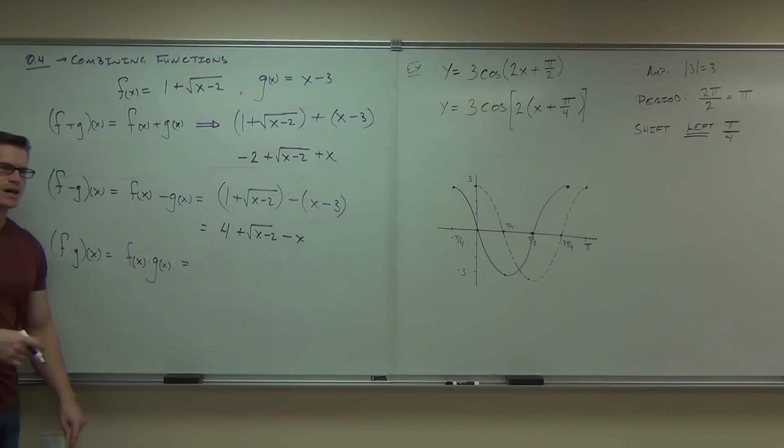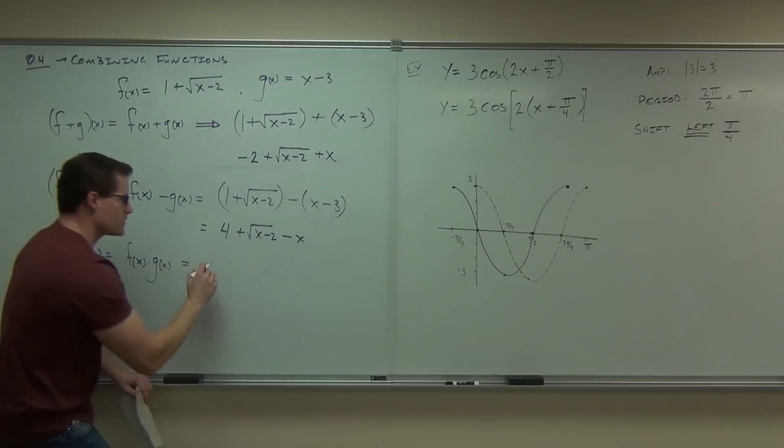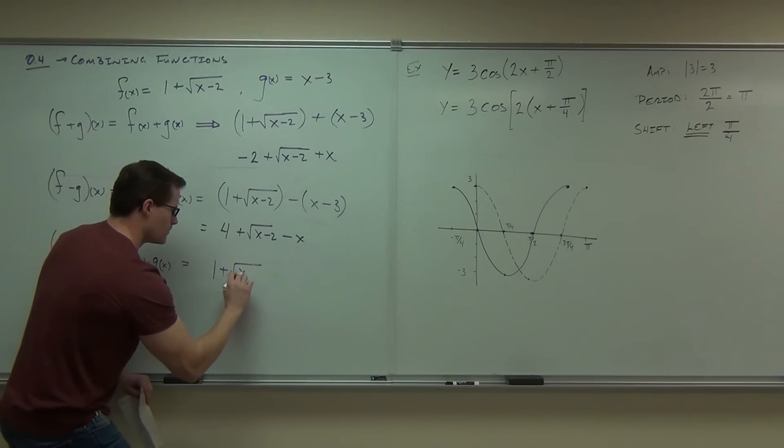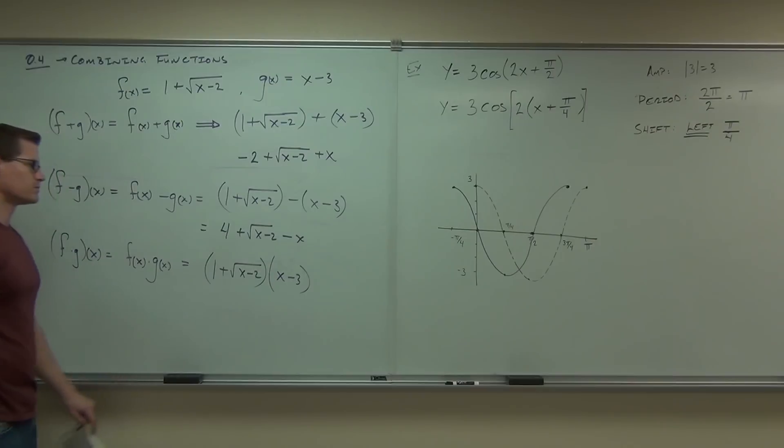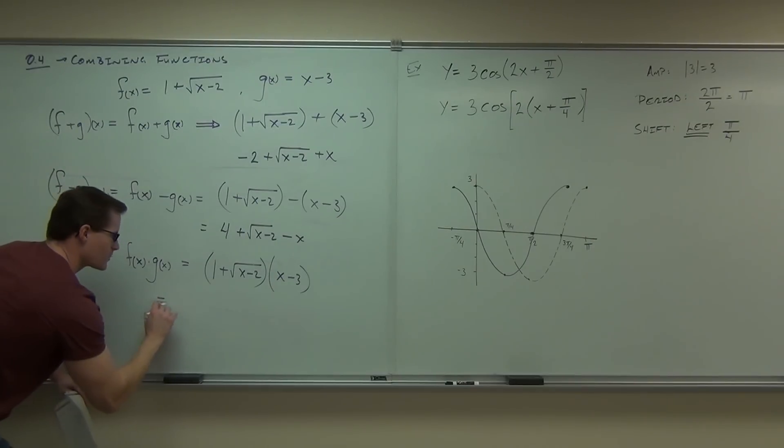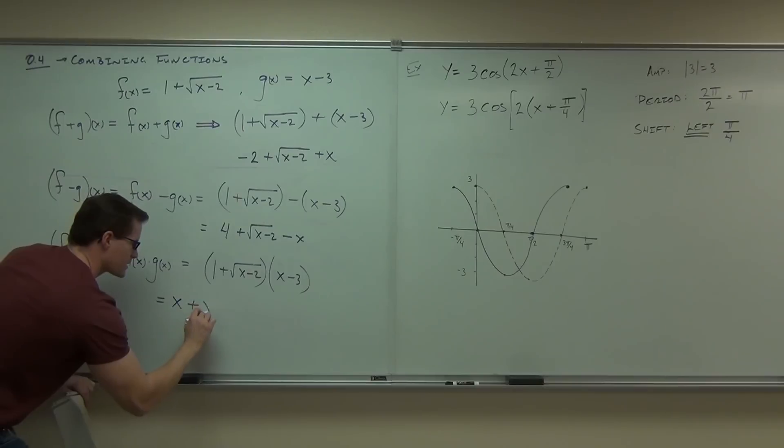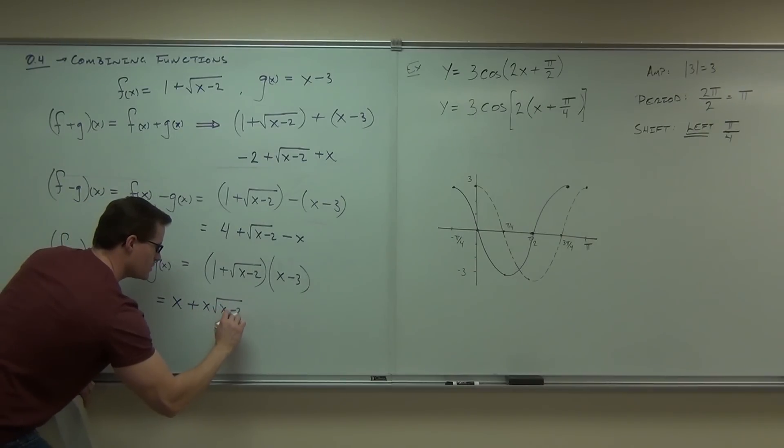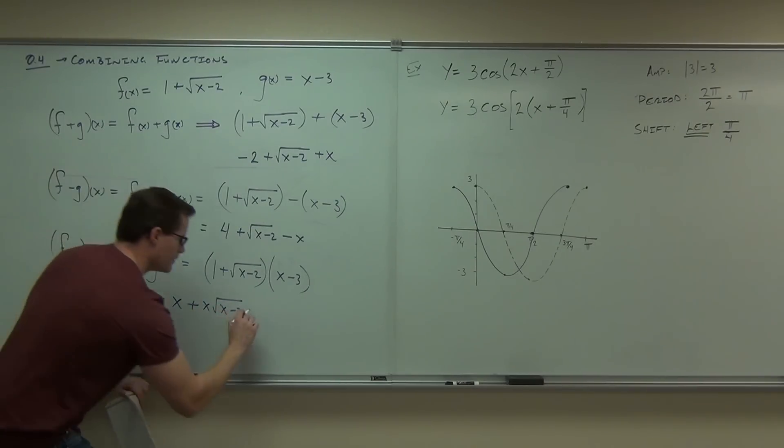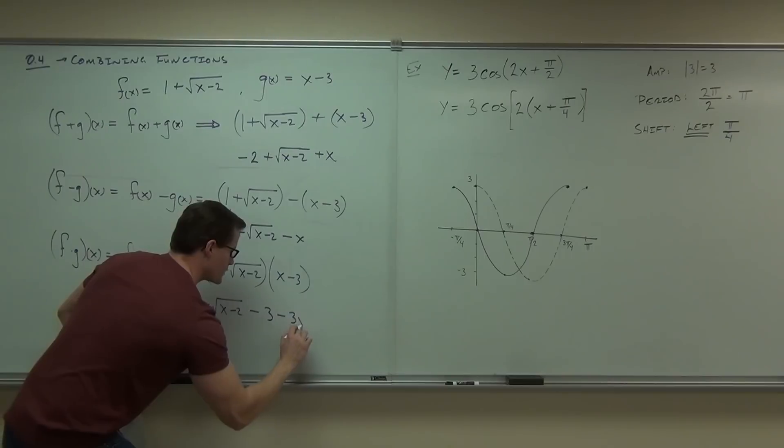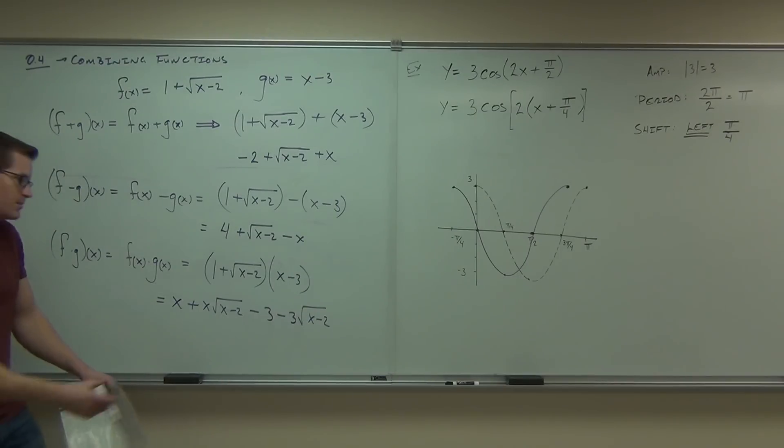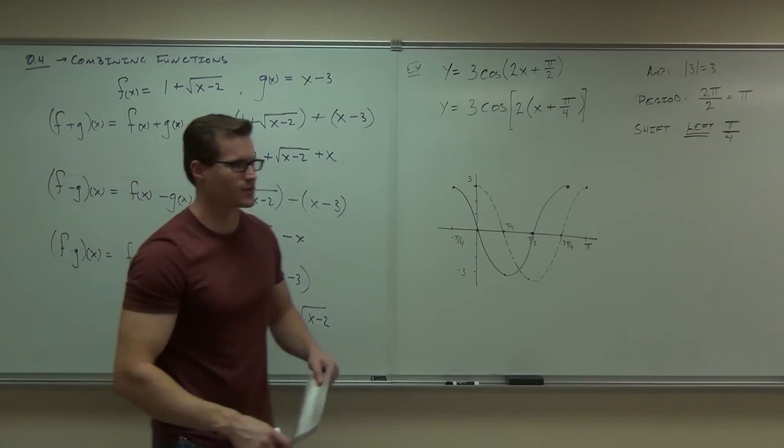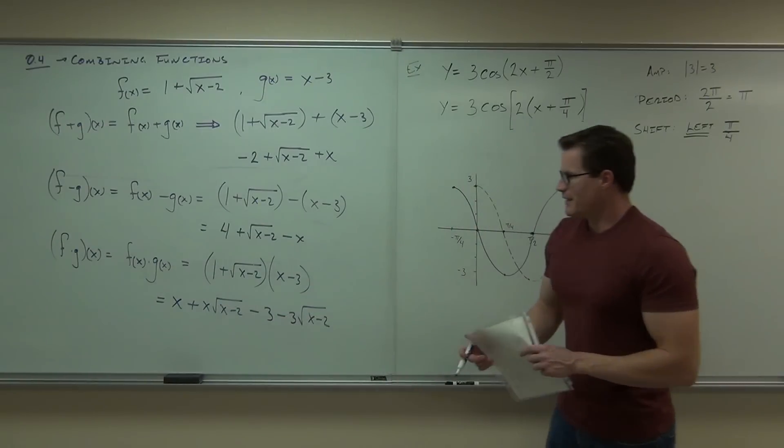If you did f of x times g of x, that's the same thing, only you're going to have to distribute. So in our case, you'd get something like x plus x square root of x minus 2. Then you'd get minus 3 minus 3 square root of x minus 2. And there's nothing you can do to combine that. That would be it. Maybe factor that back out, but you'd be doing circular mathematics. So that's it.